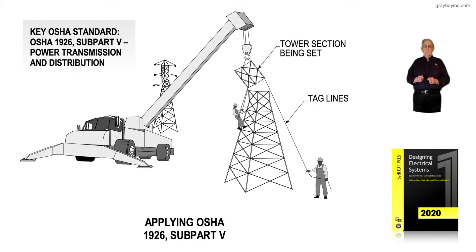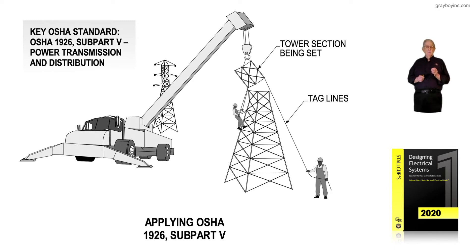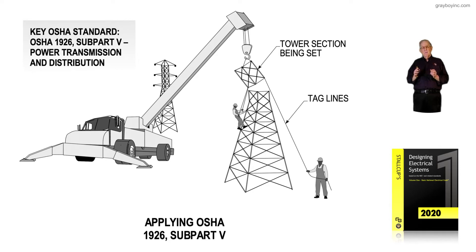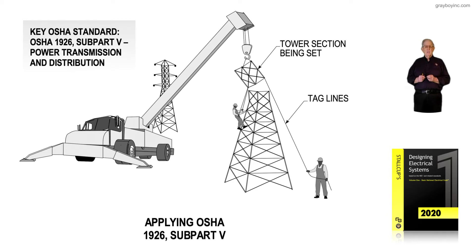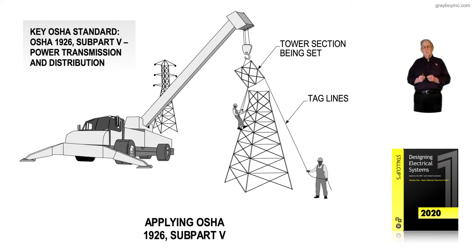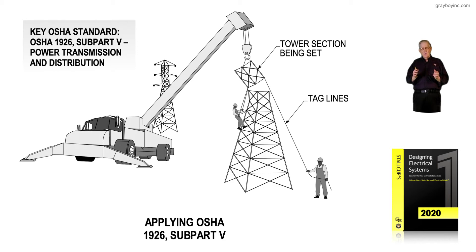This illustration deals with applying OSHA 1926 Subpart V, as in Victor, on the supply side. Remember the previous illustration where we looked at OSHA 1926 Subpart K, which dealt with construction on the load side. So if a contractor or utility was constructing towers or installing utility poles and supporting the overhead lines to these utility poles or towers, then OSHA 1926 Subpart V would be the section used during the construction period.